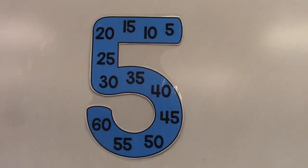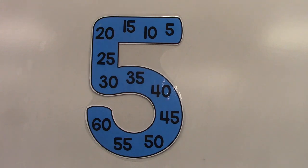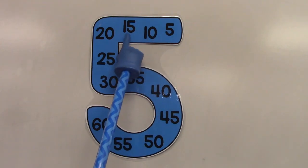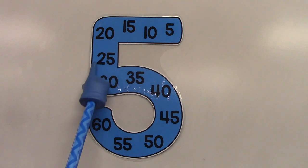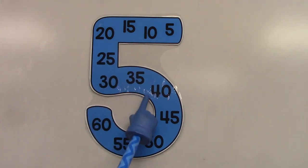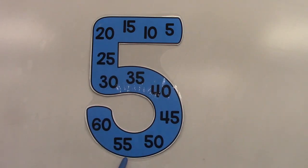Let's skip count by the number 5. Learning to skip count by 5 is very important because we need it when we're telling time and when we're counting money. Let's begin: 5, 10, 15, 20, 25, 30, 35, 40, 45, 50, 55, 60.